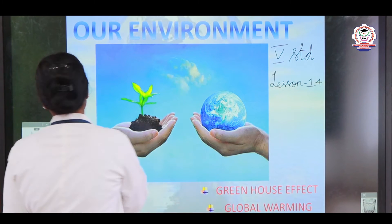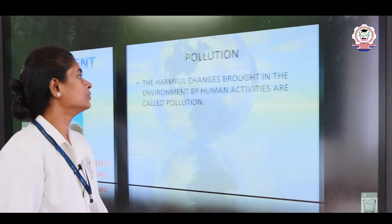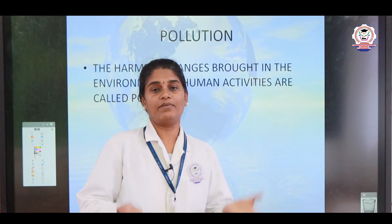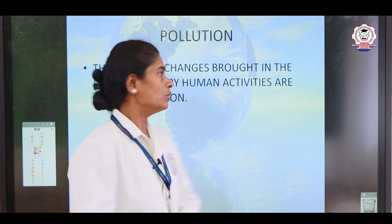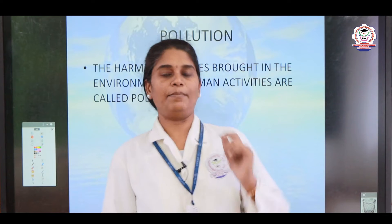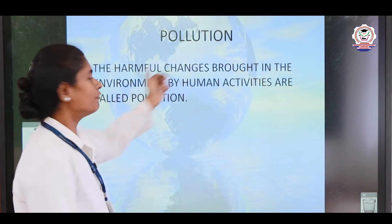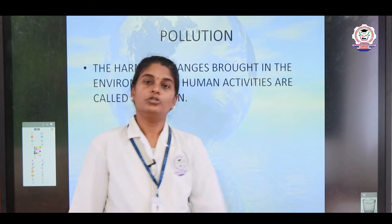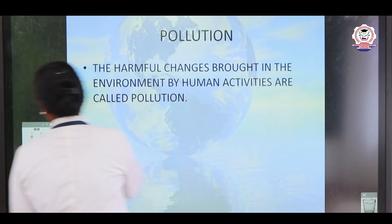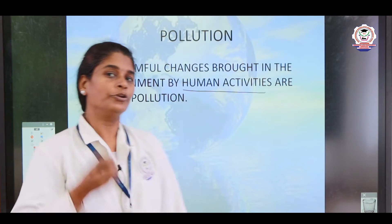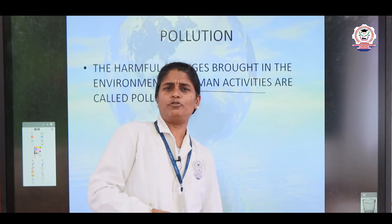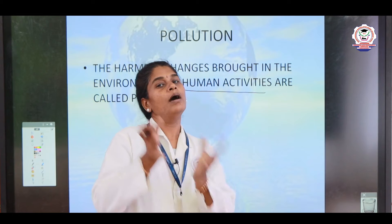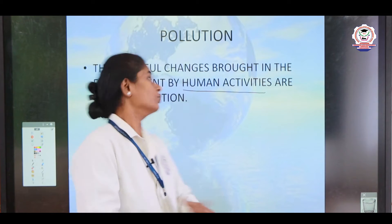In this lesson, the first thing you have to learn about is pollution. What is pollution? Pollution is nothing but any harmful changes that happen in the environment that affect the living organisms. So the definition of pollution is: the harmful changes brought in the environment by human activities are called pollution. Only human activities cause pollution — no animals or plants pollute the air or soil.